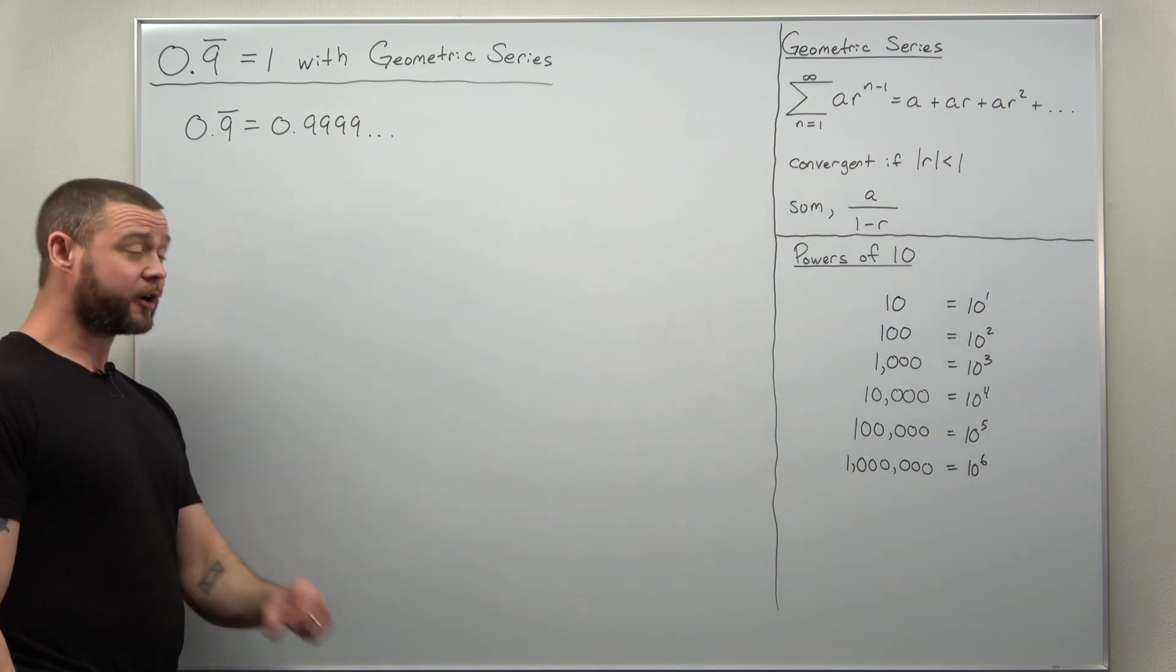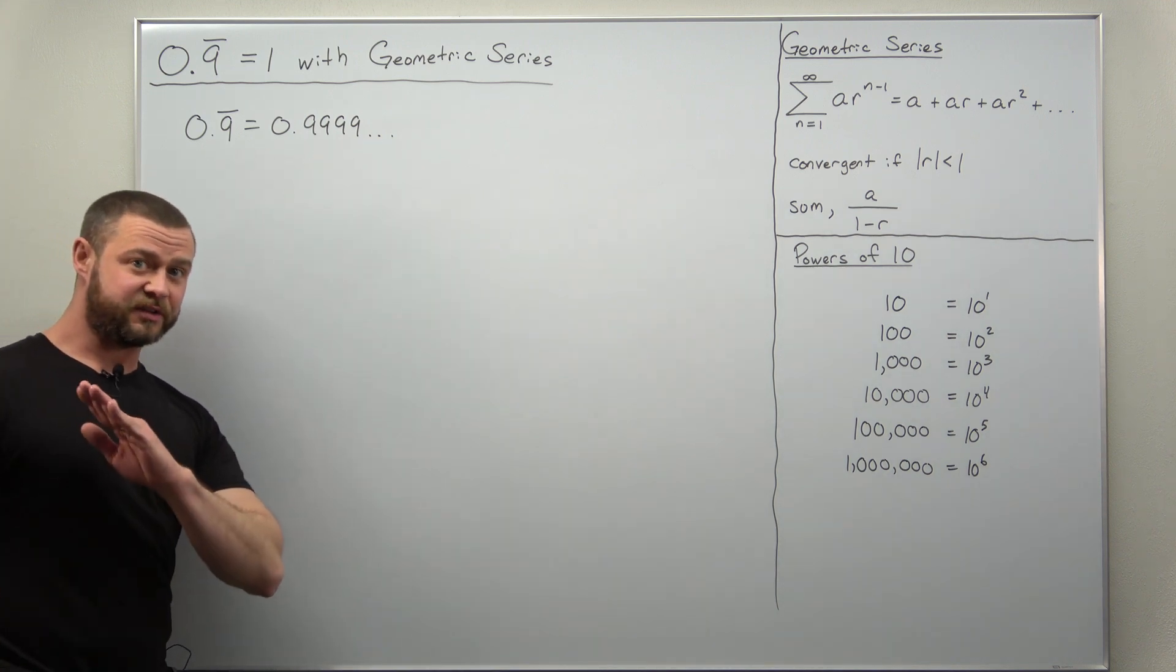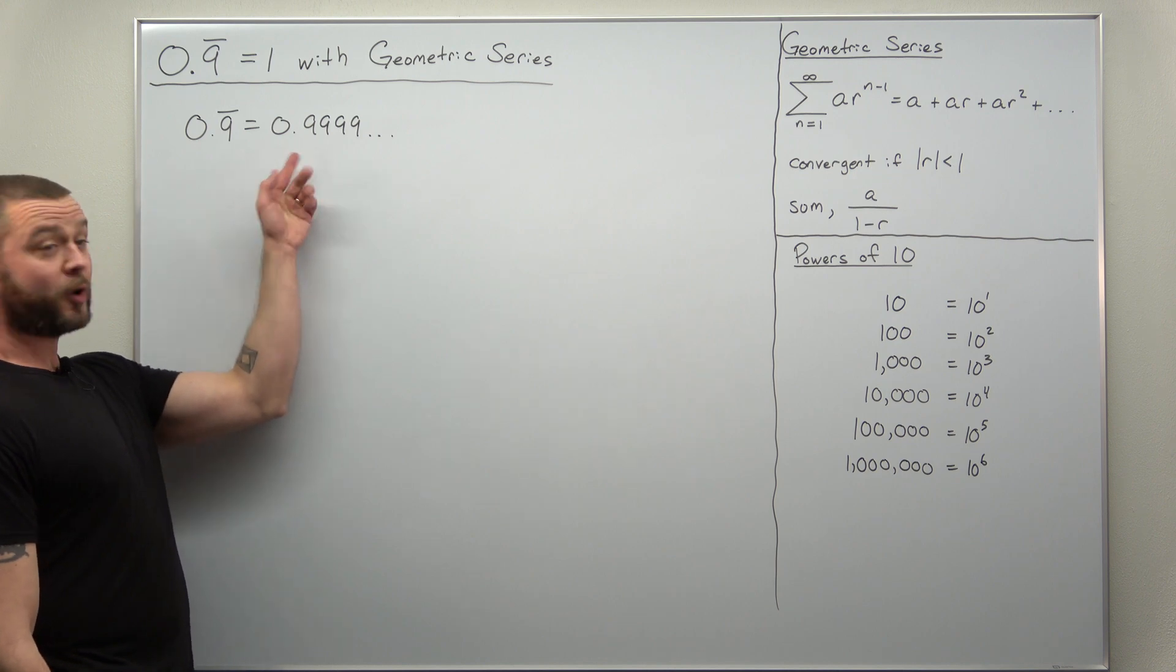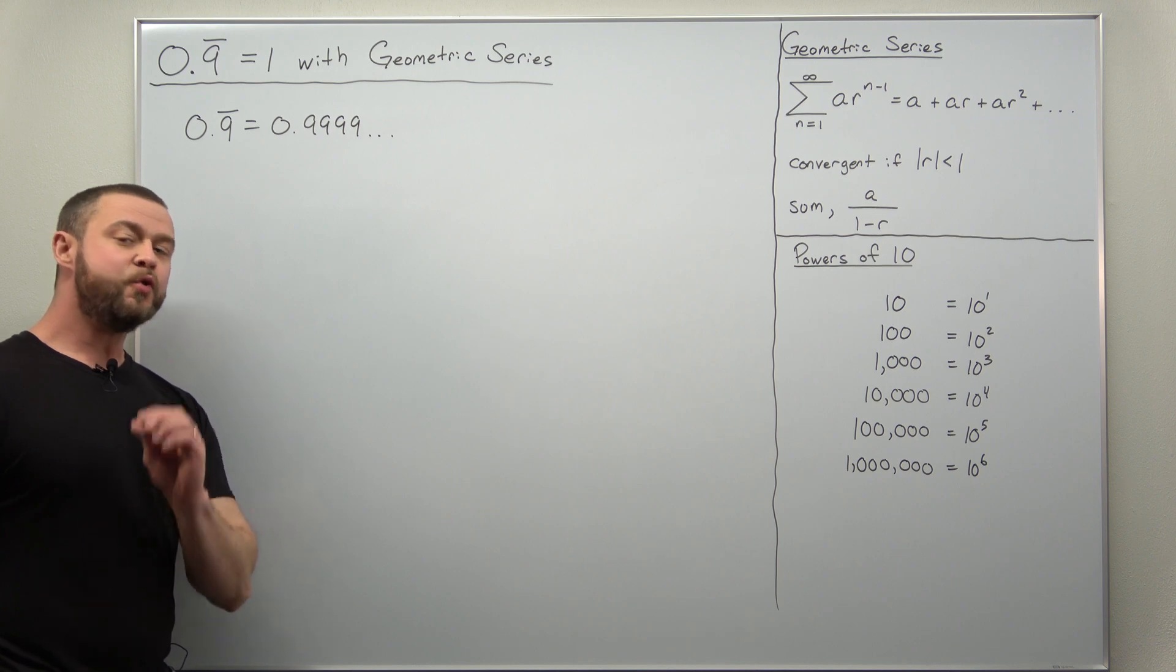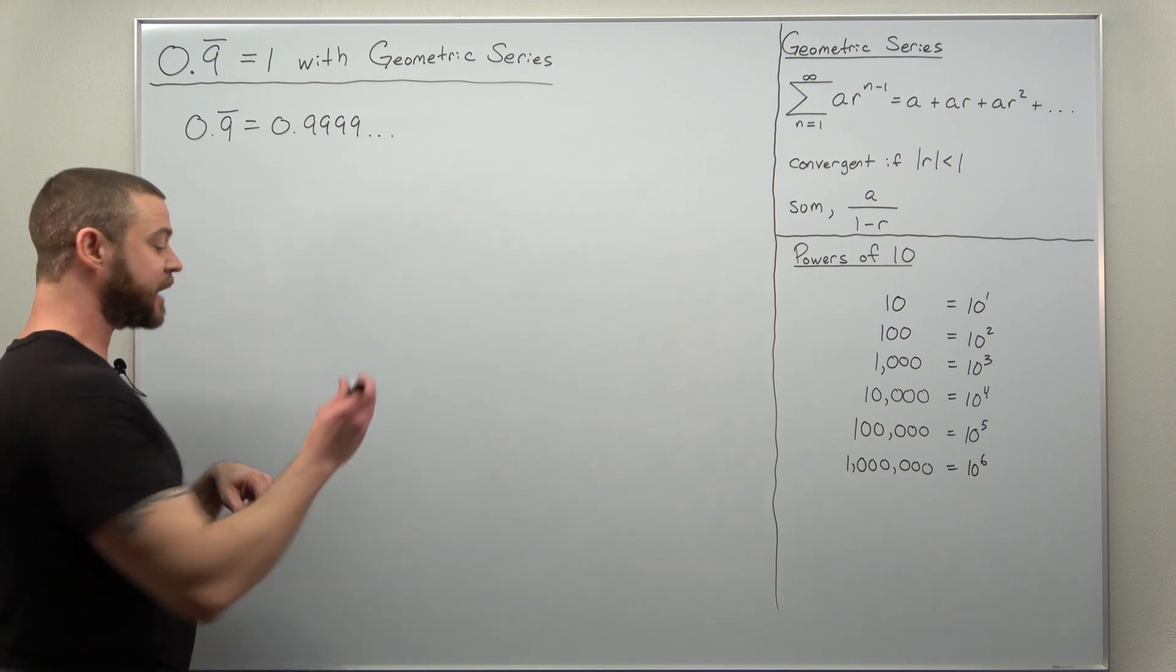So to get started, write this out in its decimal representation: 0.9999 forever. We're going to turn this into its representation as fractions.